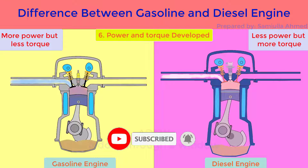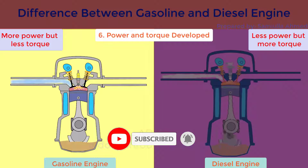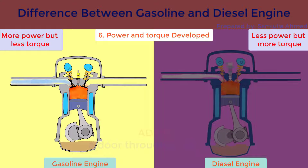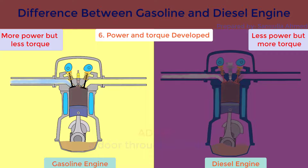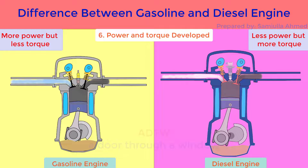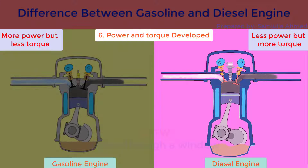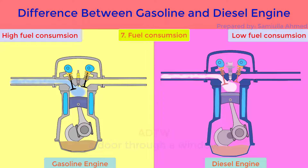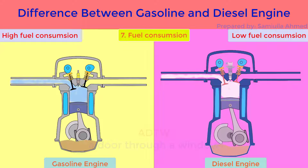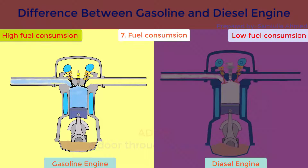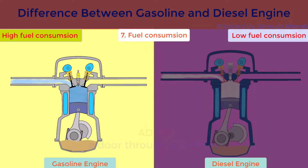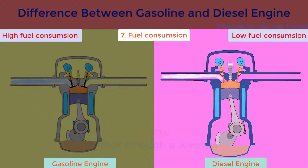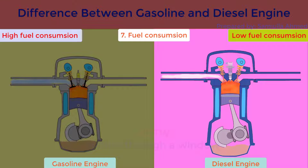Power and torque developed. Gasoline engine gives more power but less torque, whereas diesel engine gives less power but more torque. Fuel consumption: gasoline engines have higher fuel consumption, whereas diesel engines have lower fuel consumption.